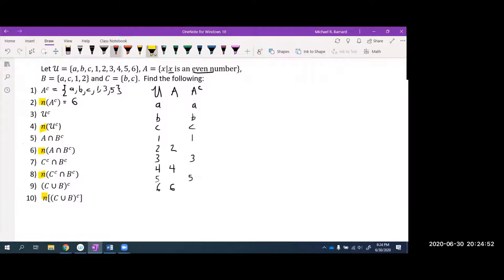So the next one is everything that is outside the universal set. Well, by definition, nothing is outside the universal set. It's the empty set. The complement of the universal set is always the empty set, which means that the number of elements outside the universal set is zero. That's the whole idea of the universal set. There's nothing else outside of it.